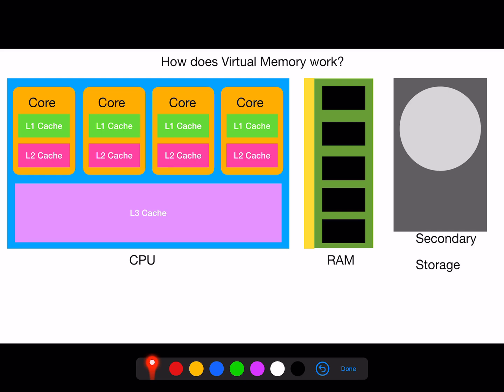We'll have a look at how virtual memory works. Here is a CPU, here is some RAM, and here is some secondary storage — could be a hard drive or maybe a solid state drive. Data is taken from RAM and put into the CPU to be processed.